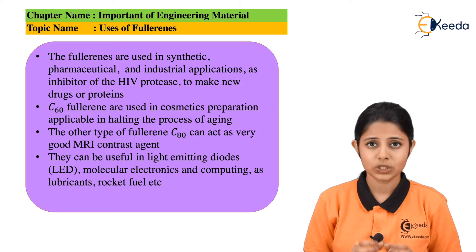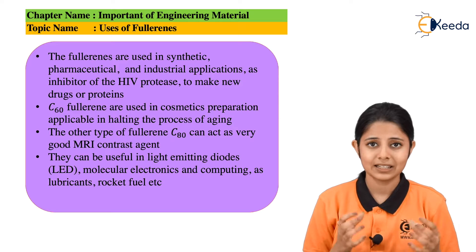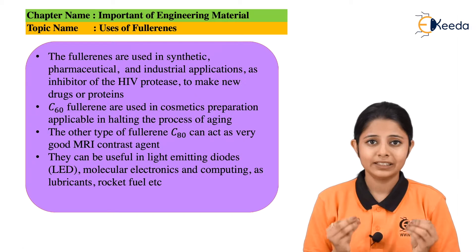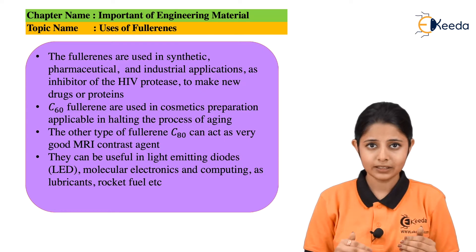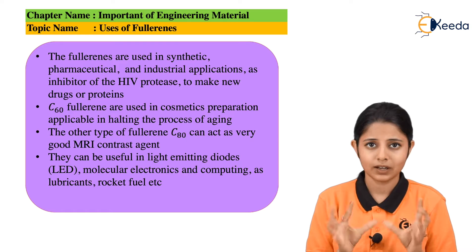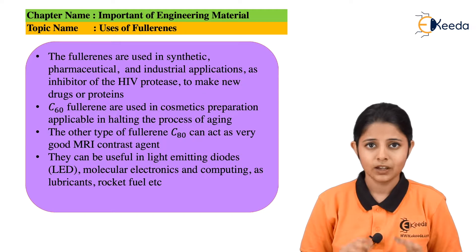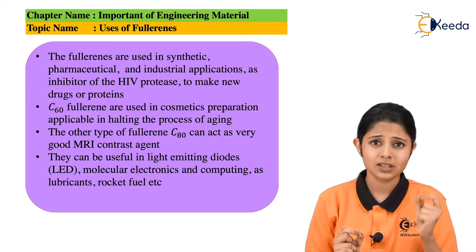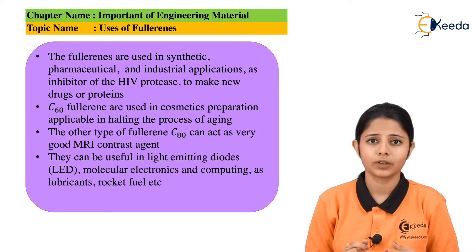Certain Fullerenes are also used in LEDs, that is light emitting diodes. LEDs emit light — we used to have LED TVs, which are screens behind which there are small diodes, and all of these diodes emit certain lights. Because of the emission of light behind the screen, we can see the picture in front of the screen. These diodes may consist of some part of Fullerene, which helps in the emission of light in a much better way.